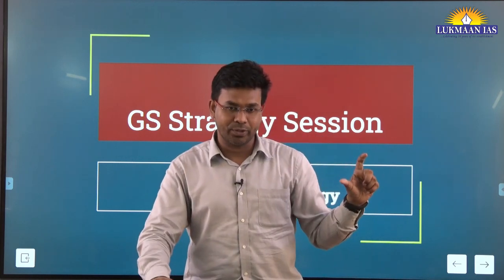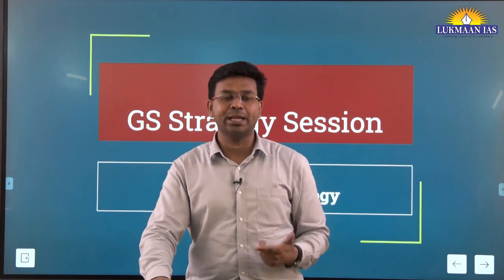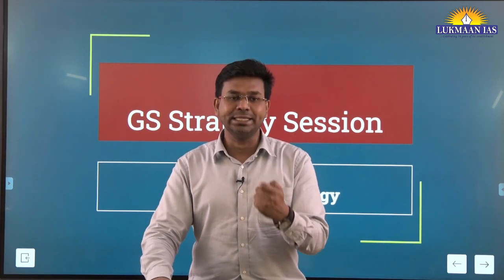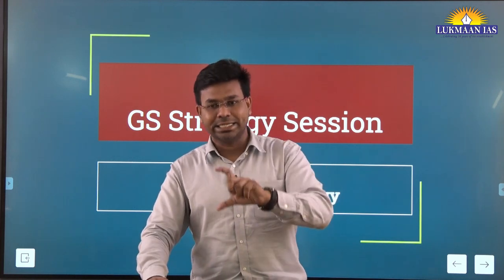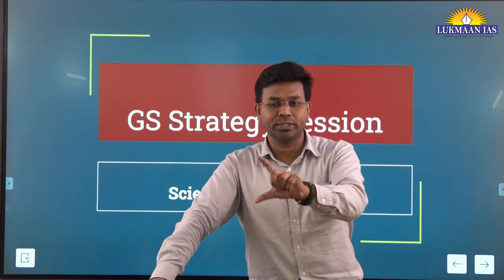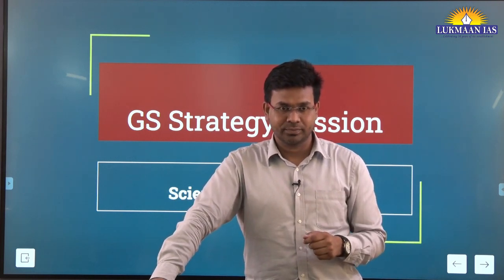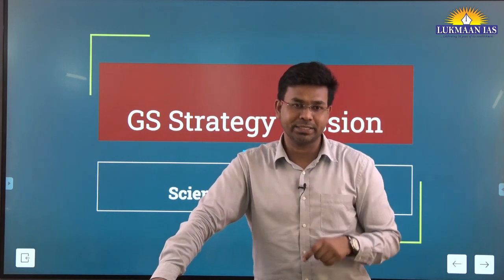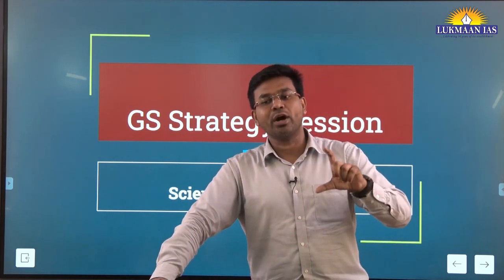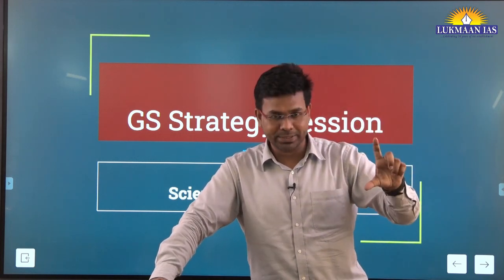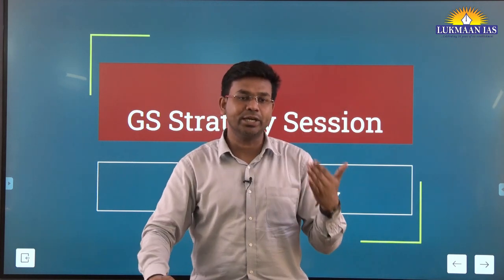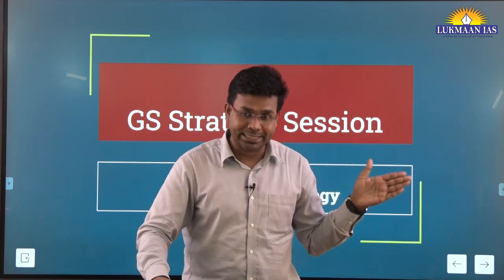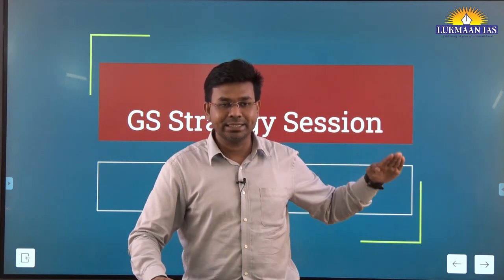Science and technology is a key area for both prelims and mains. In GS Paper 1 of prelims, 100 questions are asked. In GS Paper 3 of mains, generally 20 questions are asked. Out of those 100 questions in prelims, year on year, the number of questions from science and technology has been increasing — there is a sharp increase.